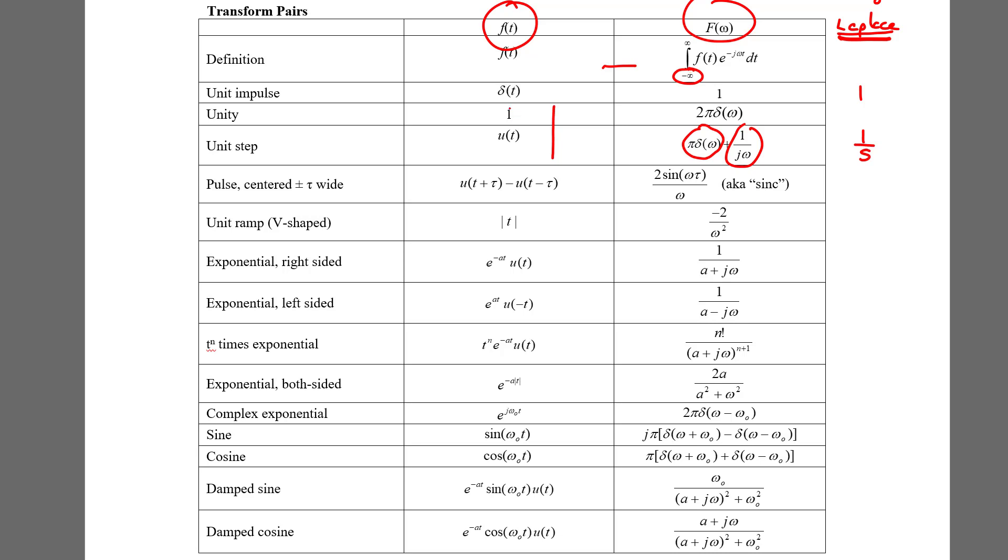Unlike the Fourier transform that begins integrating at time equals negative infinity. So unity 1 everywhere is different than u of t in the Fourier transform world unlike the Laplace world where both of these have the exact same Laplace transform of 1 over s.